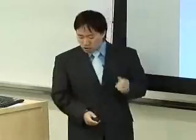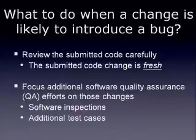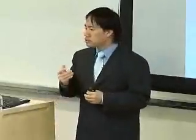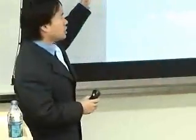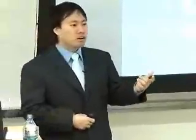Why is knowing this important? What's going to happen if we know that a change is likely to introduce a bug? First of all, you can review the submitted code very carefully, because the change you made is just very fresh — you made the change five minutes ago. You can definitely see what the problem is, if there is one. Or if you want, you can add more additional QA efforts, like running more tests and doing more inspections. Knowing if a change will introduce a bug or not is a very important problem.